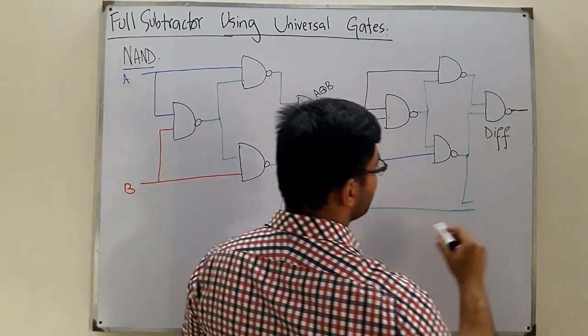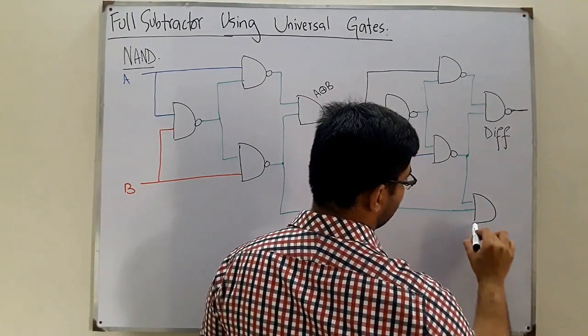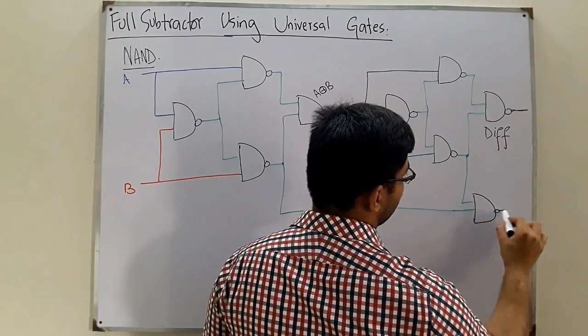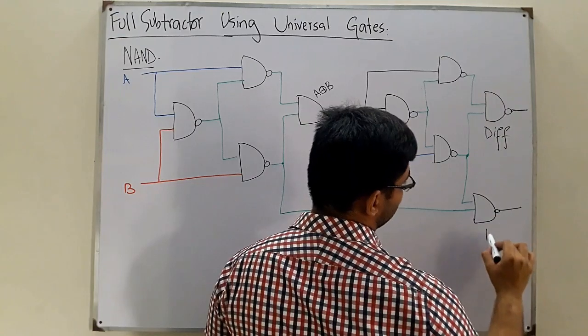These two outputs are NANDed together, and they give you the borrow.